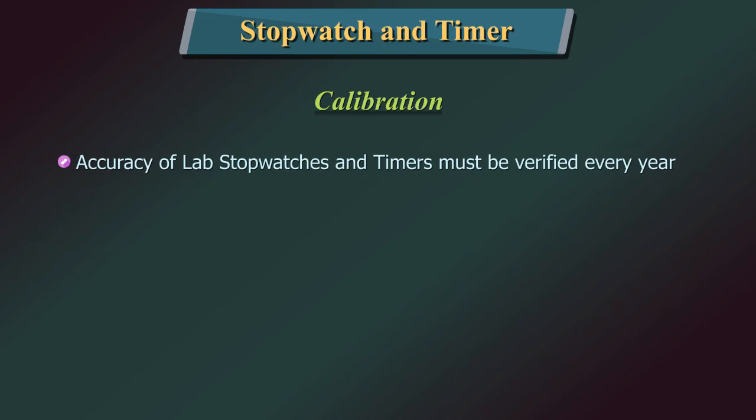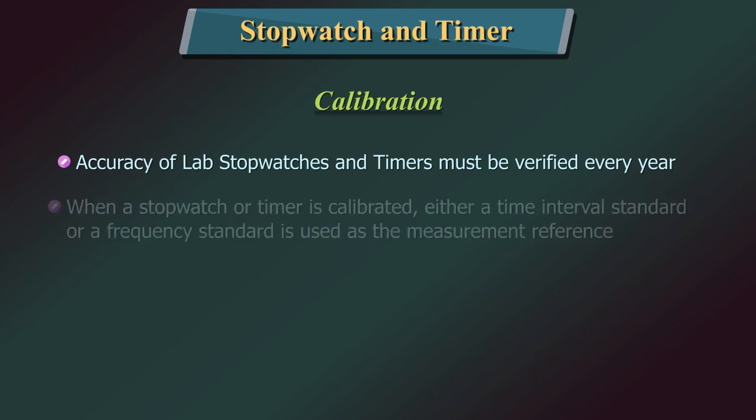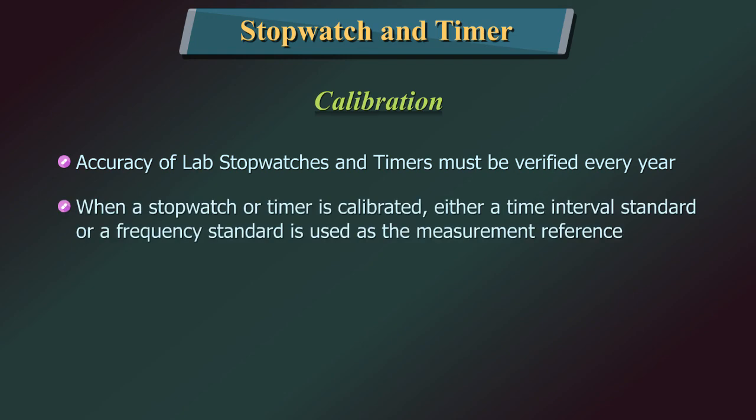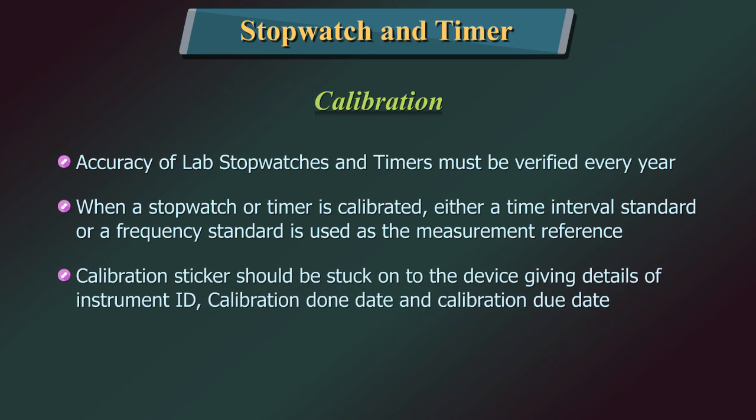The accuracy of stopwatches and timers must be verified every year. When a stopwatch or timer is calibrated, either a time interval standard or a frequency standard is used as the measurement reference. The calibration sticker should be stuck onto the device giving details of instrument ID, calibration done date, and calibration due date.